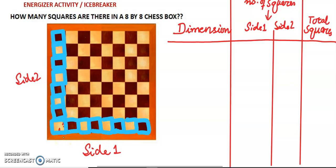Counting the highlighted squares, along side 1 there are 1, 2, 3, 4, 5, 6, 7, 8 — that is, 8 squares.